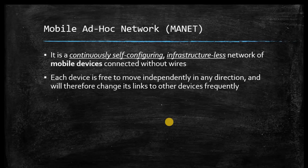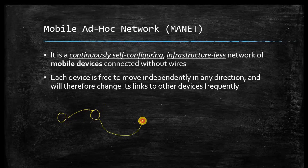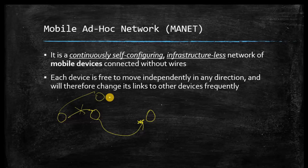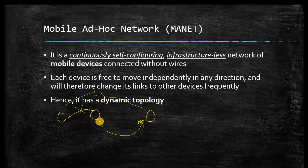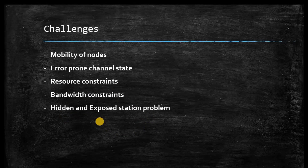Each device in a MANET is free to move independently in any direction and will therefore change its links to other devices. This is the major challenge in MANET: a node may move from one location to another, breaking existing links. To establish a path between two nodes, another path must be found. Hence MANET has a dynamic topology and there are significant challenges because of this mobility.